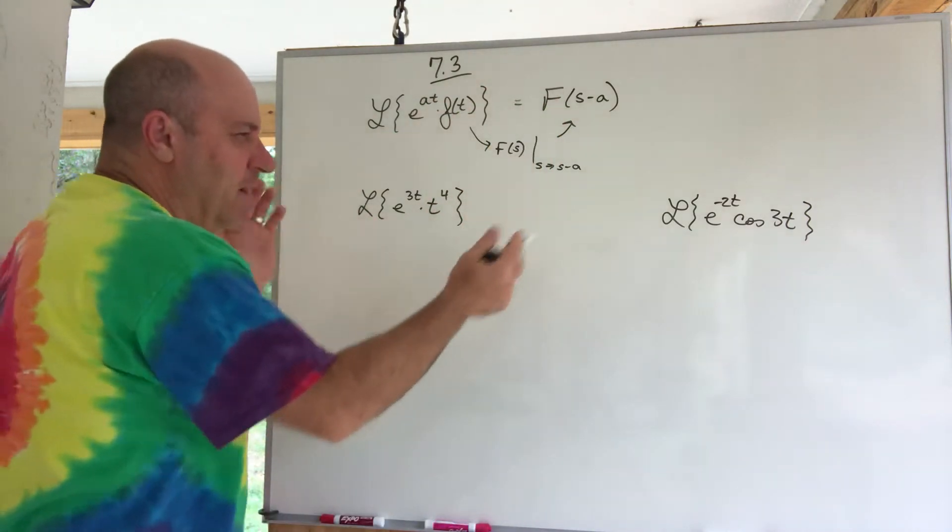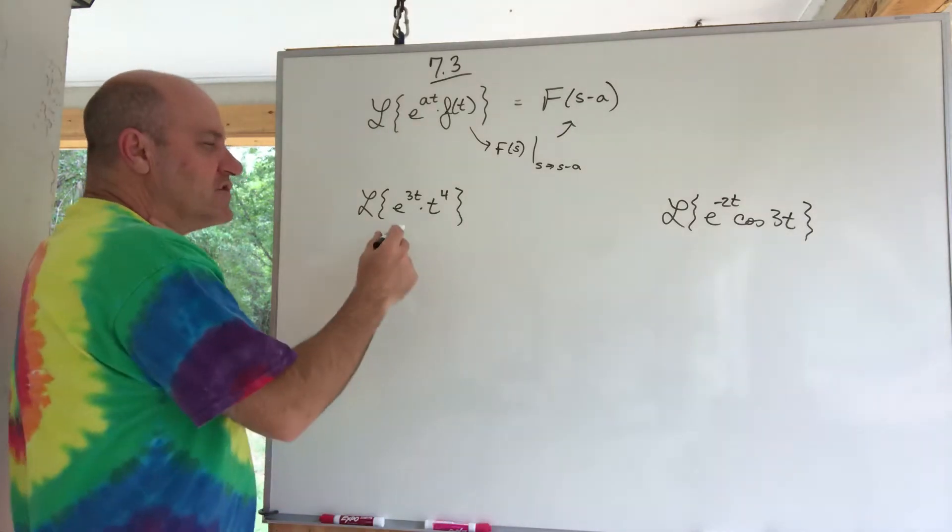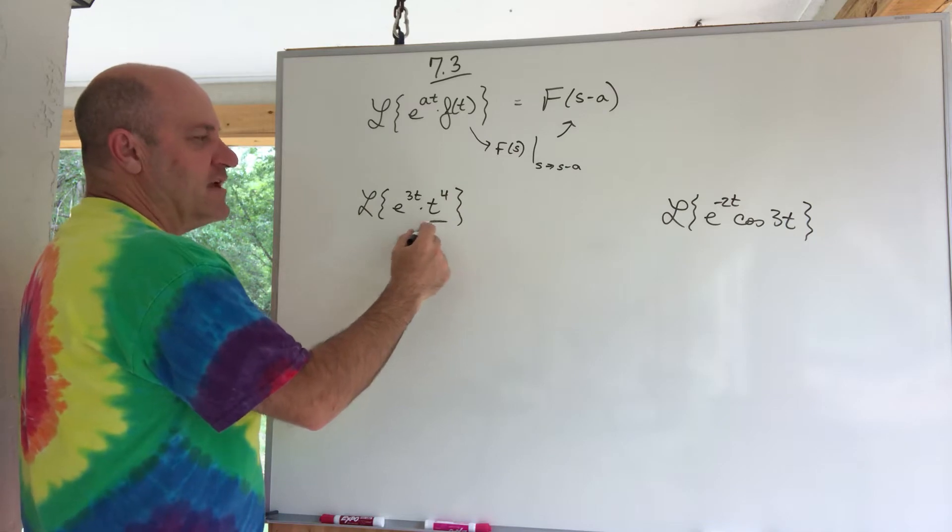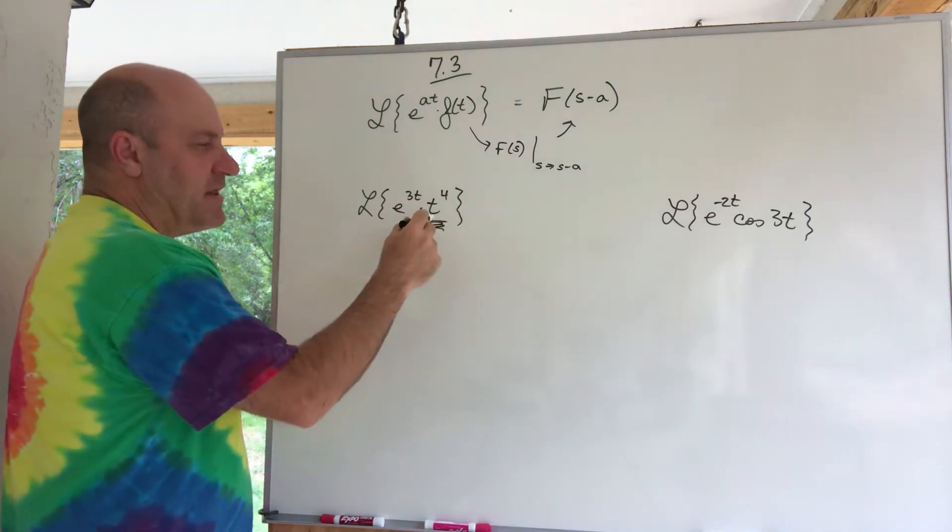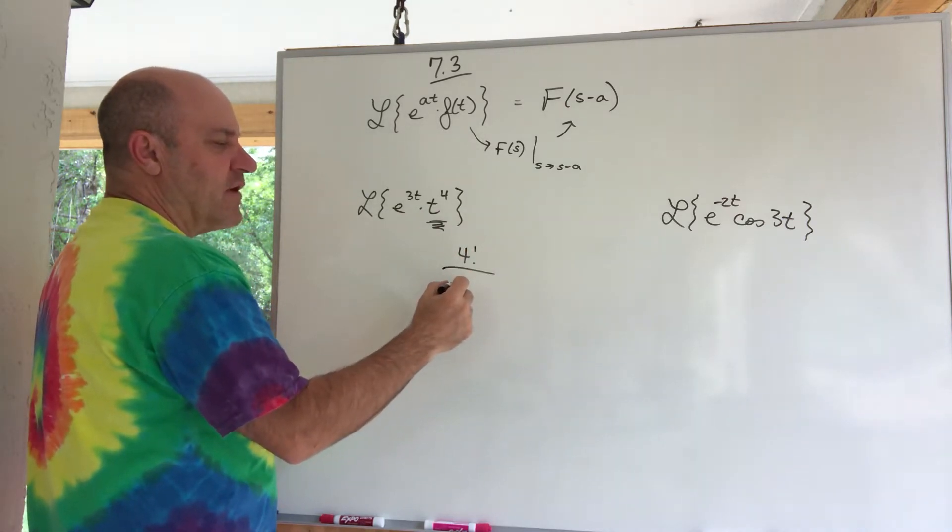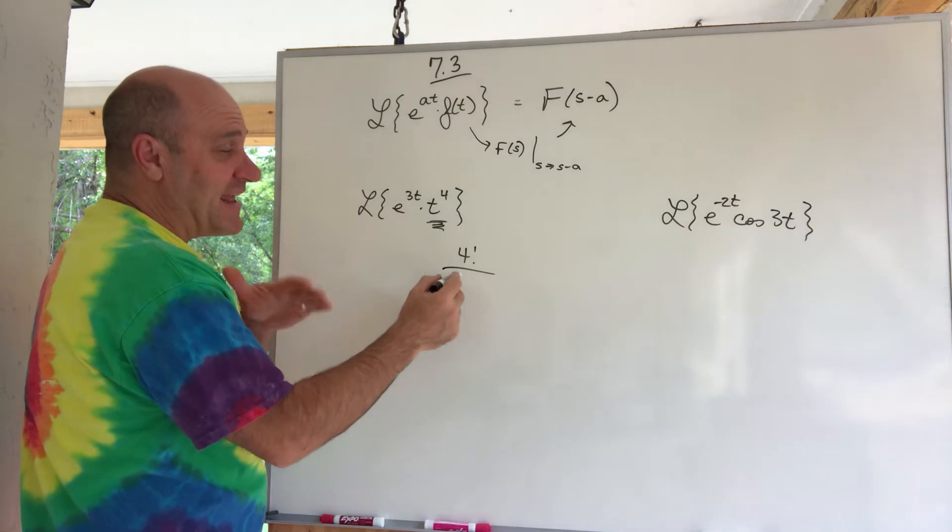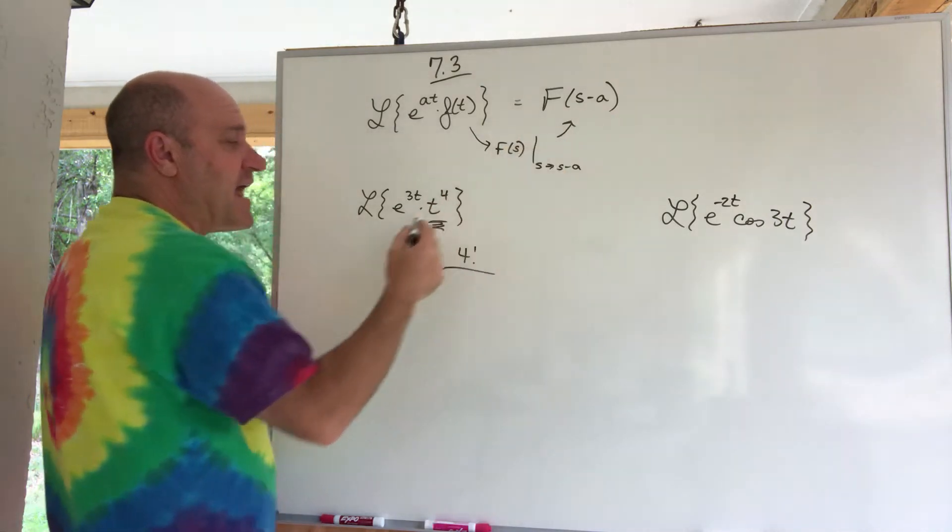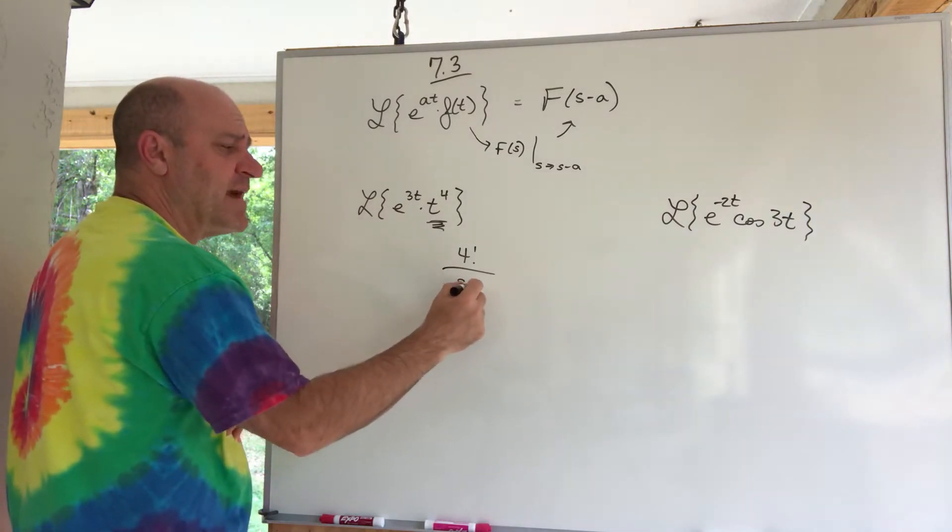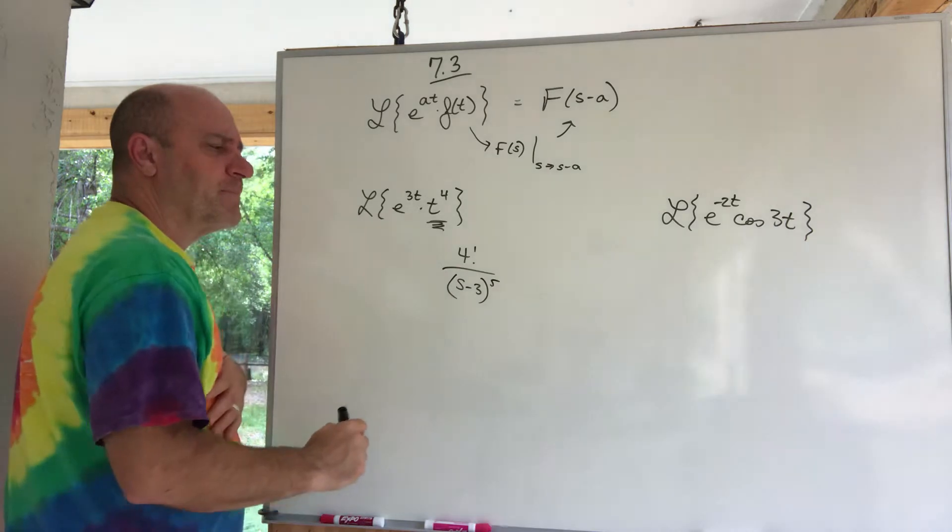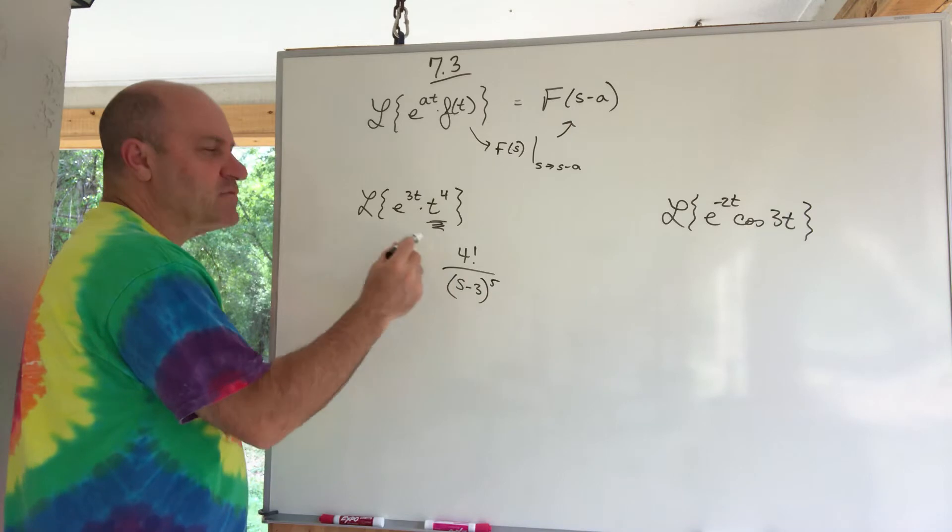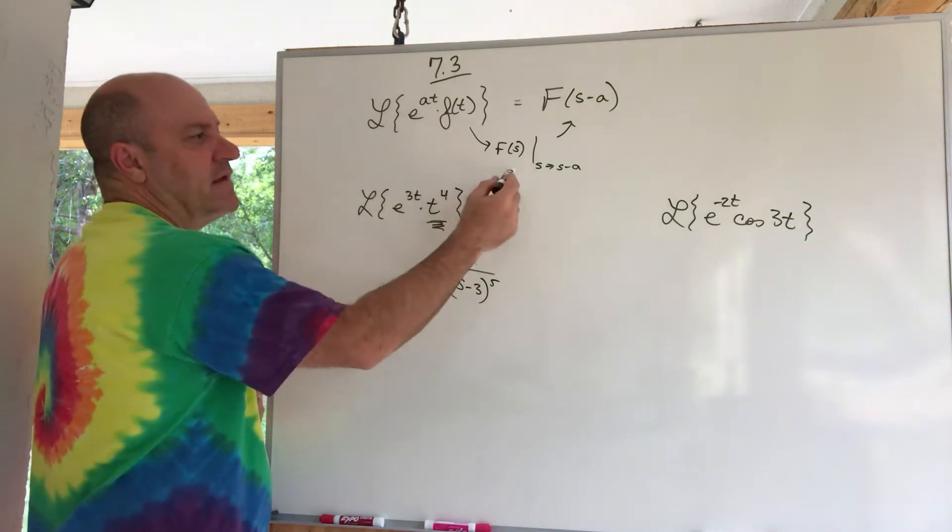So I've got a couple examples. I've got several examples I'd like to do here. So if I want to apply this rule, what I do is I do its Laplace. Its Laplace, I believe that's 4 factorial over s to the 5th. Okay, hold on. But instead of writing s to the 5th, I should write s minus a. I mean, anywhere there's an s, I replace it with s minus a, so I guess it's s minus 3 to the 5th.